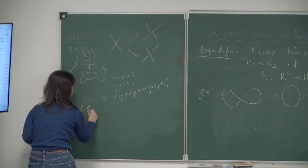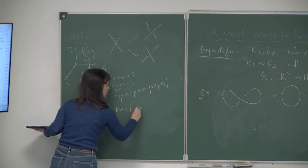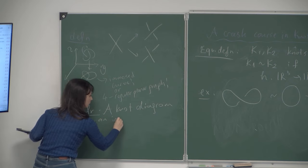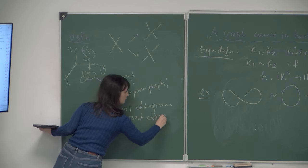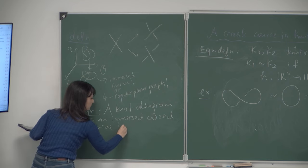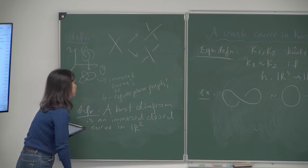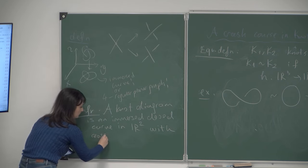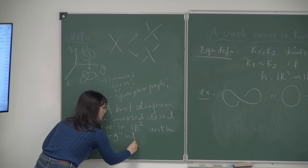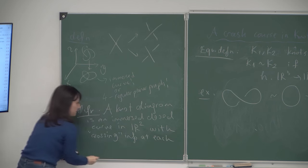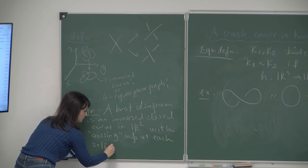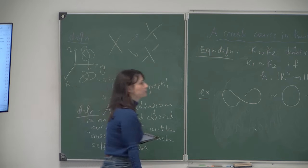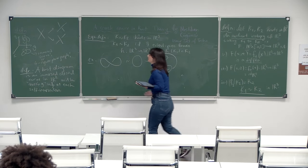Definition: a knot diagram is an immersed closed curve in R² with a crossing information at each self-intersection or double point. We require that projections be transversal with transversal self-intersections - at each vertex, the two tangent vectors span the tangent space of the plane. We don't allow tangency intersections or multiple intersections resulting in higher-degree vertices.